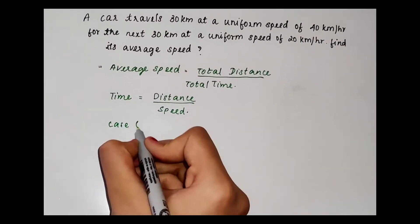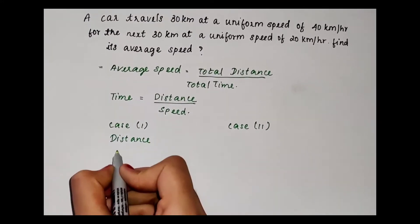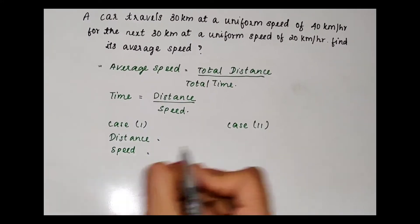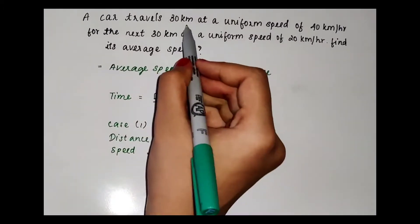Let us consider this question into two cases. Case 1: distance is equal to 30 km and speed is equal to 40 km per hour. Case 2: distance is equal to 30 km and speed is equal to 20 km per hour.